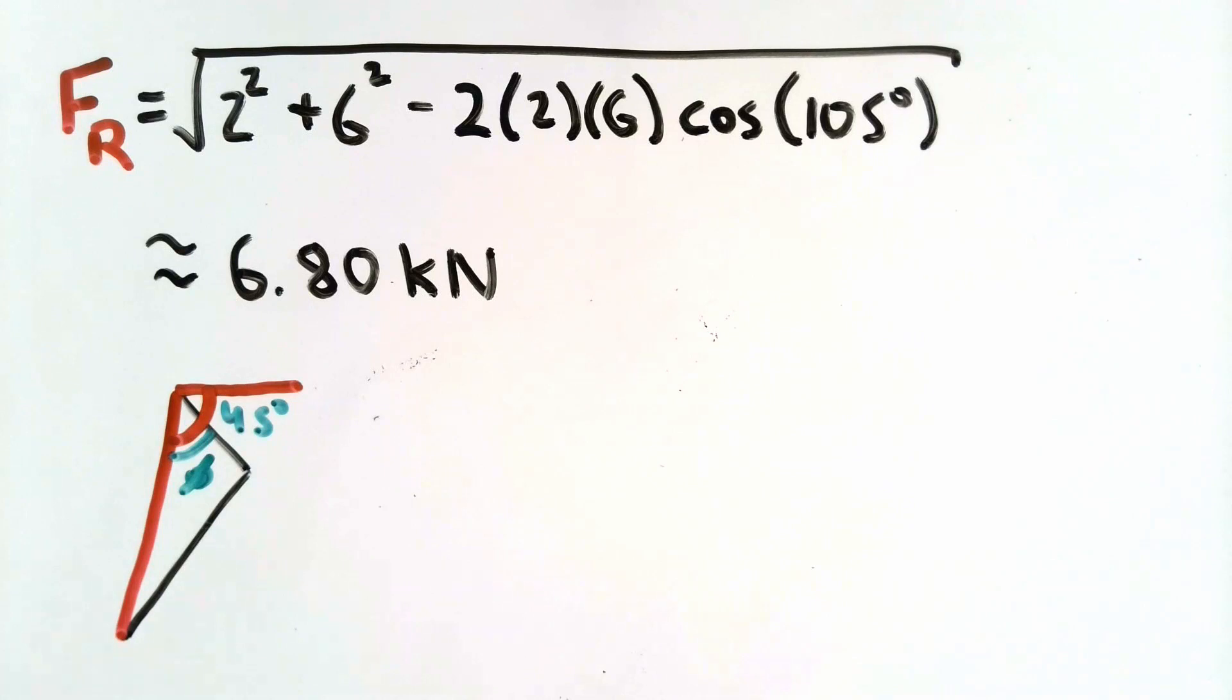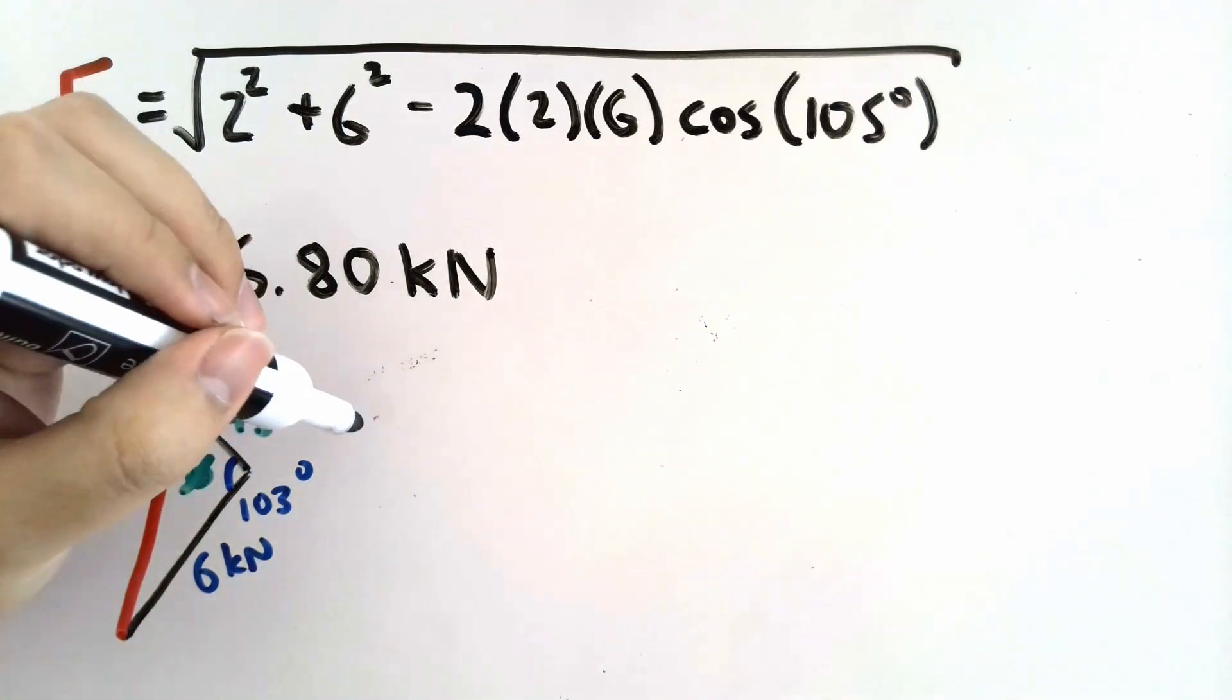If we look at this triangle, we already know what the angle corresponding to the resultant force is. That is 103 degrees. So if we want to find out the unknown angle phi, all we need to do is combine or use the sine law using the 103 degree angle, the magnitude of my resultant force, and the magnitude of the force vector opposite to the unknown angle.